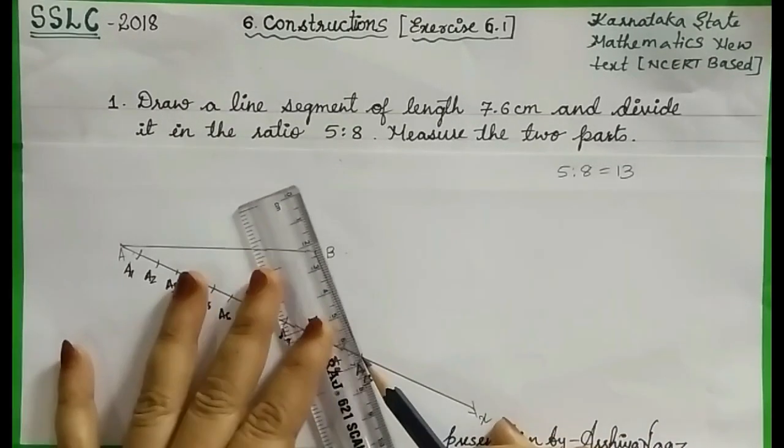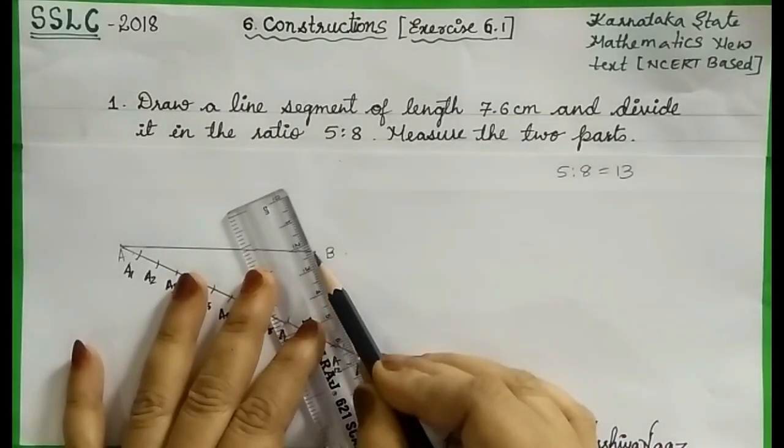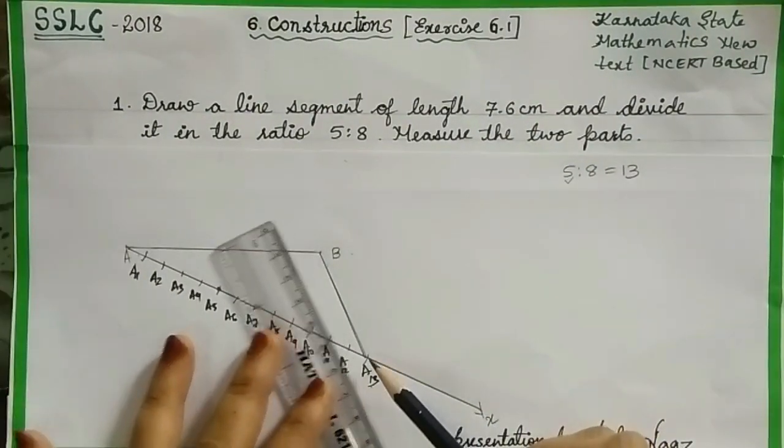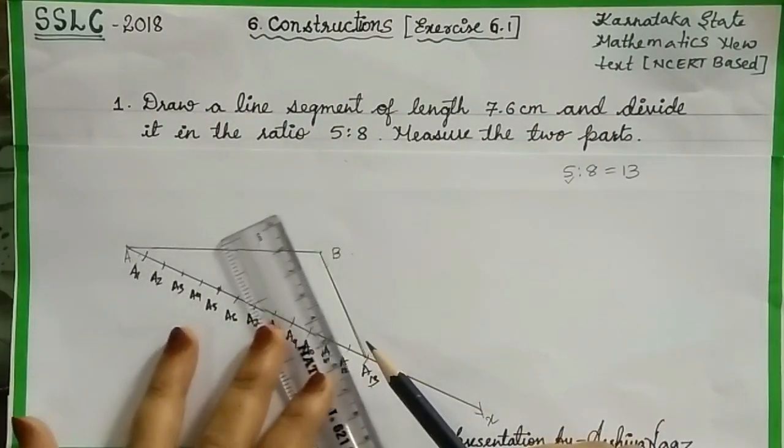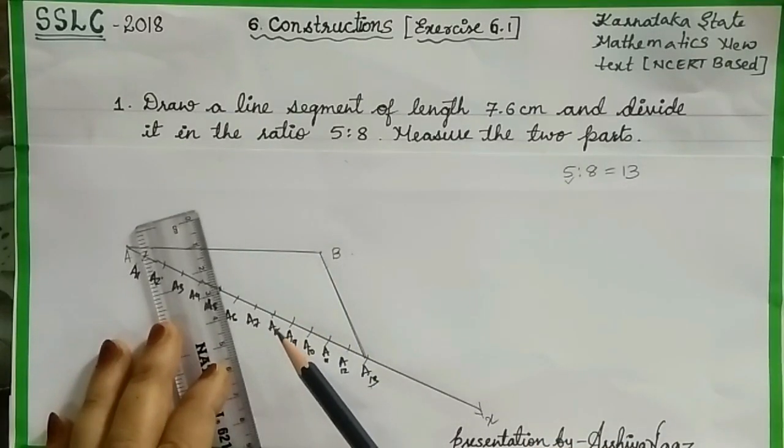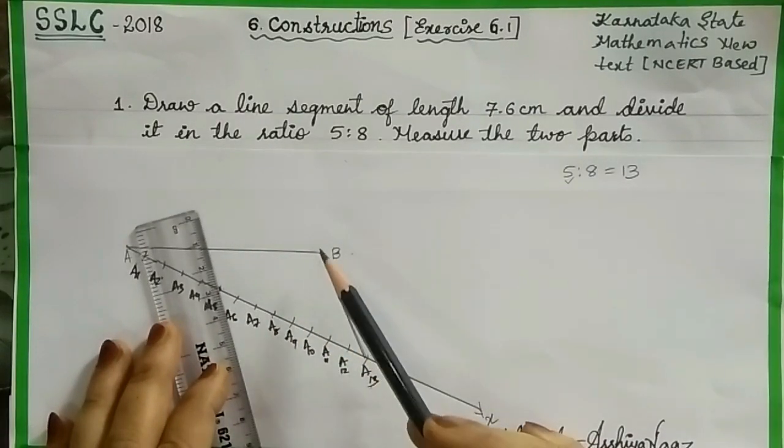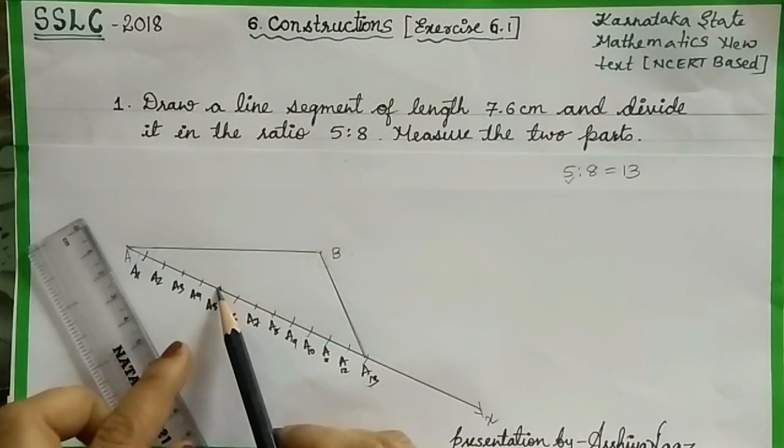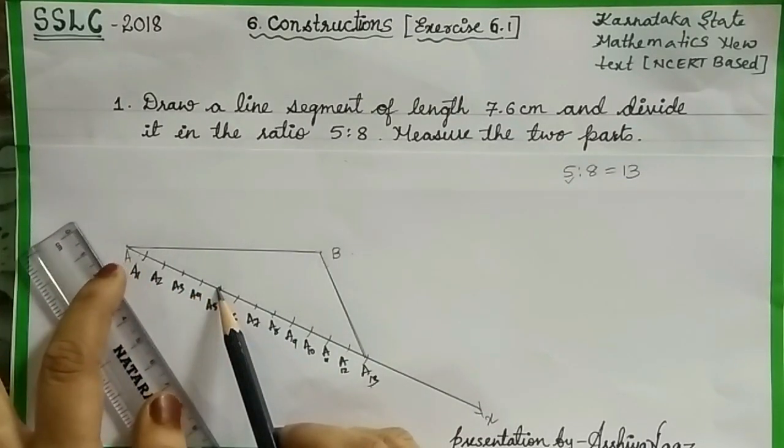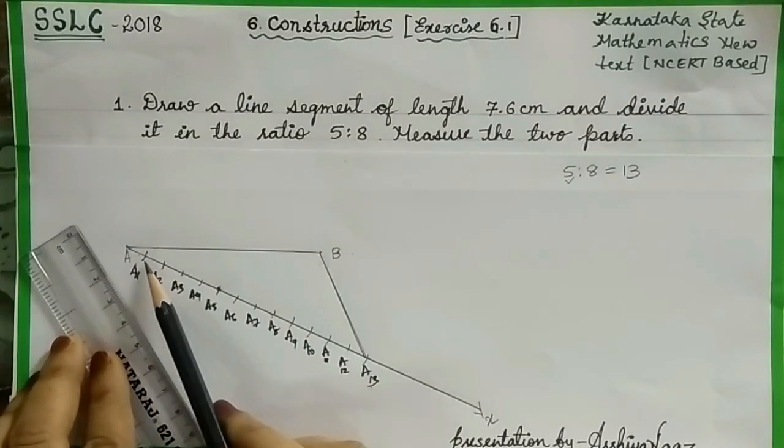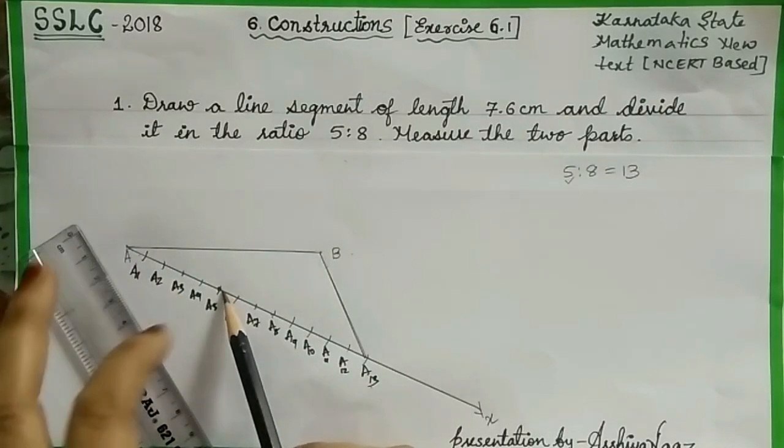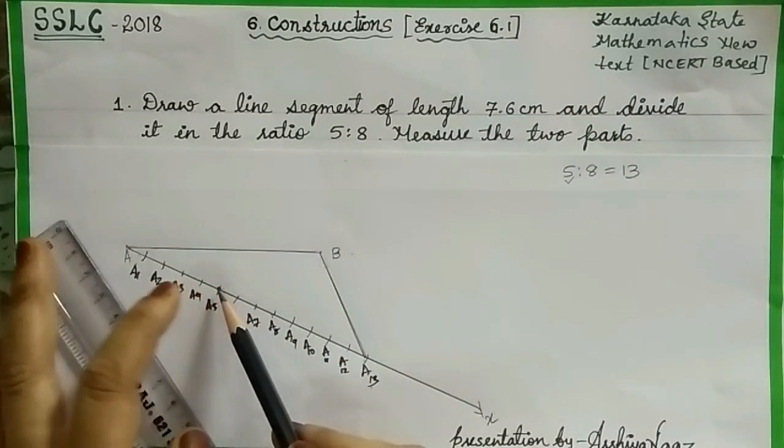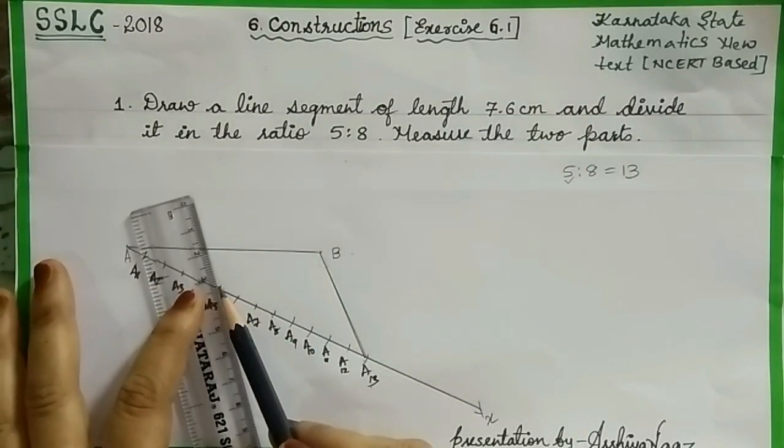Then join A13 and B. Now we have to draw a line which is parallel to A13B from point A5, because till A5 we get 5 parts: 1, 2, 3, 4, 5 parts, and the remaining parts are 8.